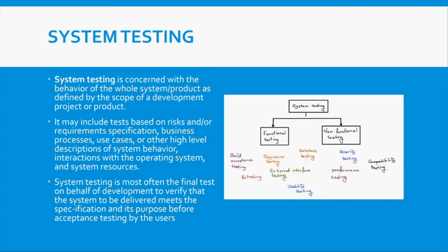System testing tests the behavior of the whole system, and defines the scope of the development project or product that will be released. In system testing, you want to base your testing on risk, requirements, specifications, business processes, use cases, and high-level descriptions of the application or interactions between the operating system.